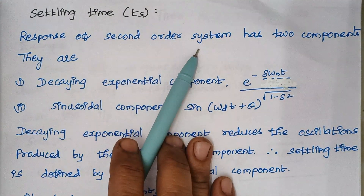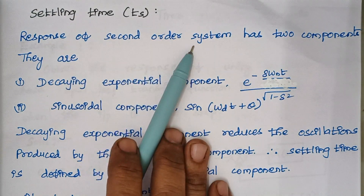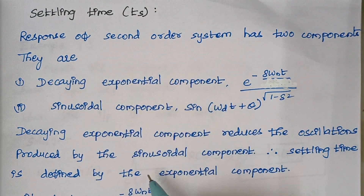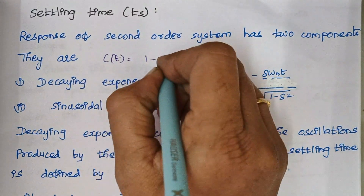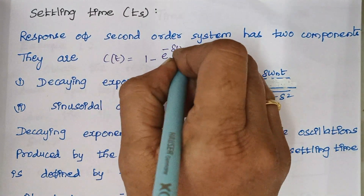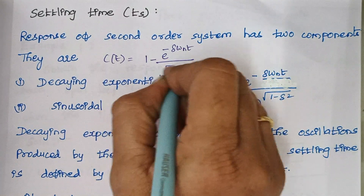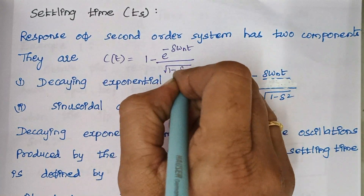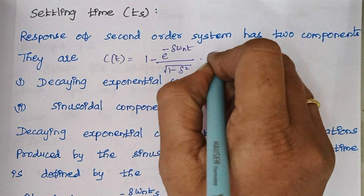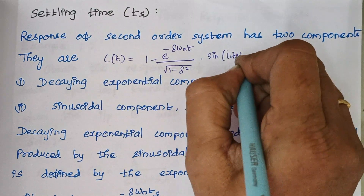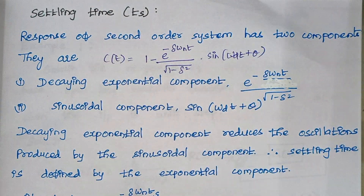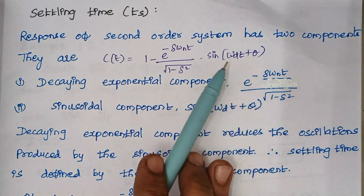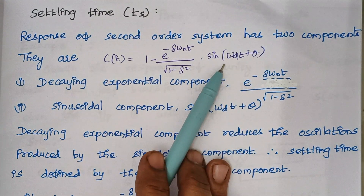The response of a second order system — we already know what is the general expression of a second order system. It is given by c(t) = 1 minus e to the power minus zeta omega_n t, divided by root of 1 minus zeta squared, into sine of omega_d t plus theta. This is the general expression of a second order system under the underdamped case.